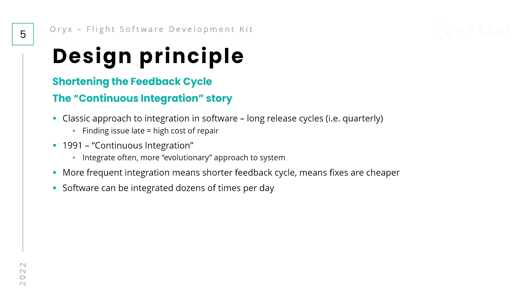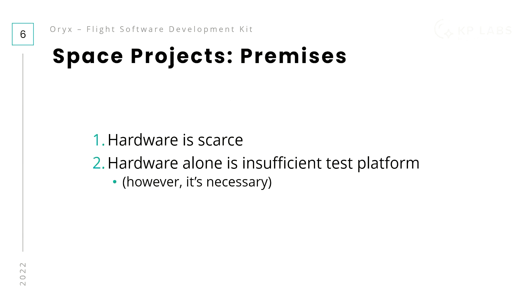Short feedback cycles mean you are very confident about your changes, and if you notice something you notice it while you still have context loaded in your mind, so the cost of fixing it is relatively low. Shortening the feedback cycle is something you could apply to other engineering practices as well - this is similar to lean engineering and lean production. This is one of the major design principles we use: our software should support working in this way.